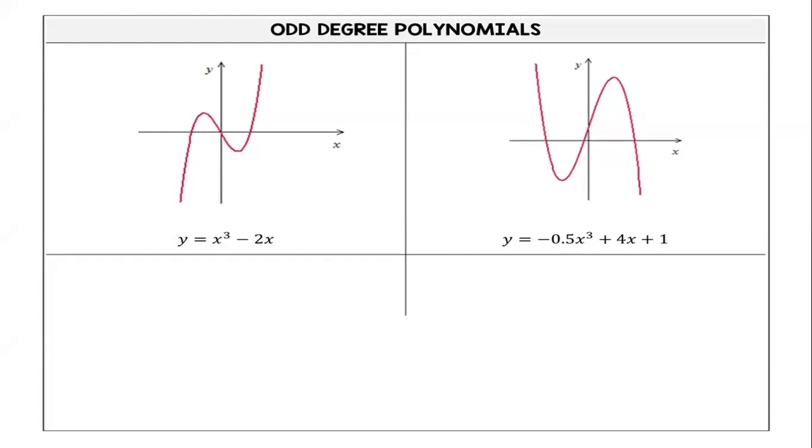Okay, so we know that this is an odd-degree polynomial. Just from looking at the function, it's odd-degree because it has opposite behaviors, right? Just by looking at the graph, we know that it has to be odd.